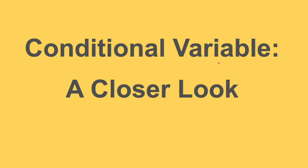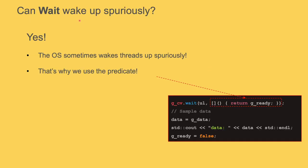Let's look at conditional variables more closely. Can wait wake up spuriously? Spuriously means waking up without anyone actually sending a notification. Weirdly, the answer is yes — it has to do with OS implementation. Just be aware that wait can return for no apparent reason. That's exactly why we use the predicate — it protects against spurious wakeups. If we wake up for no reason we check the predicate; if it's not true, we go back to sleep. Always include this predicate and you're protected.